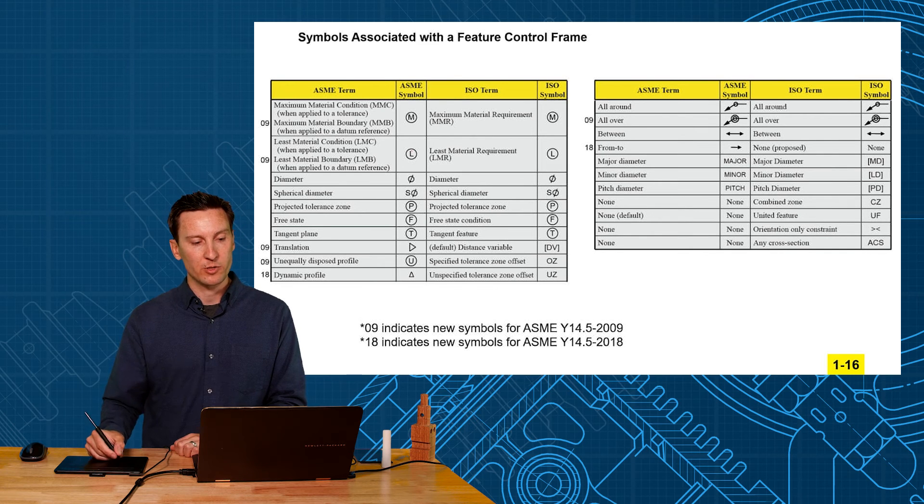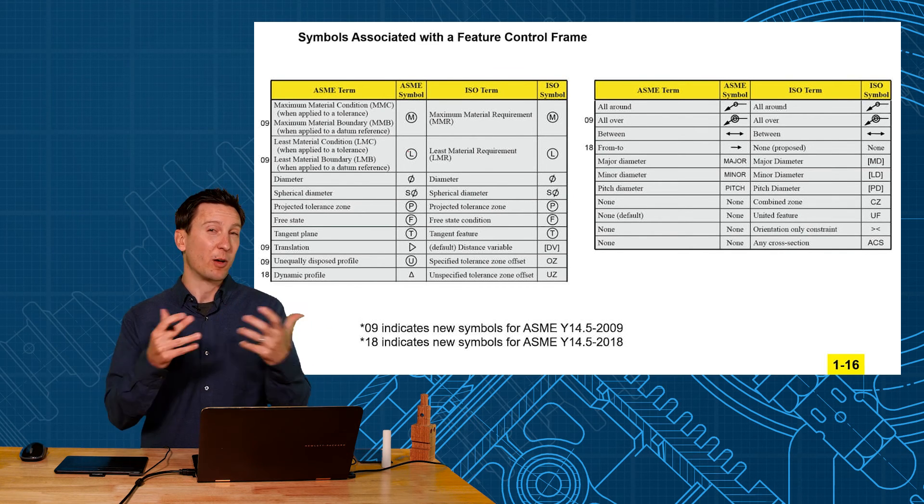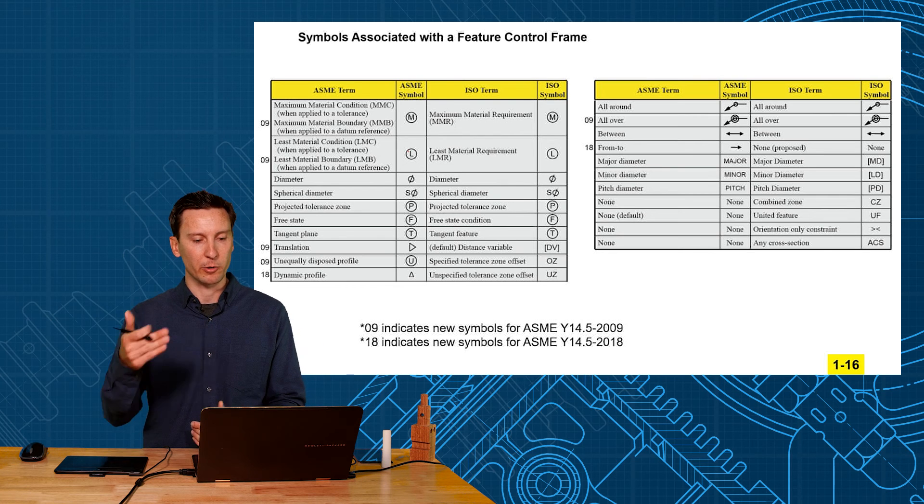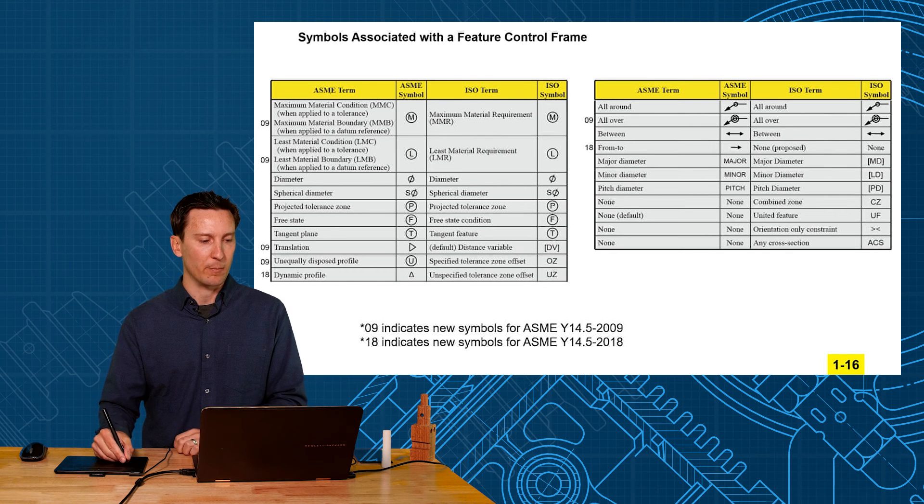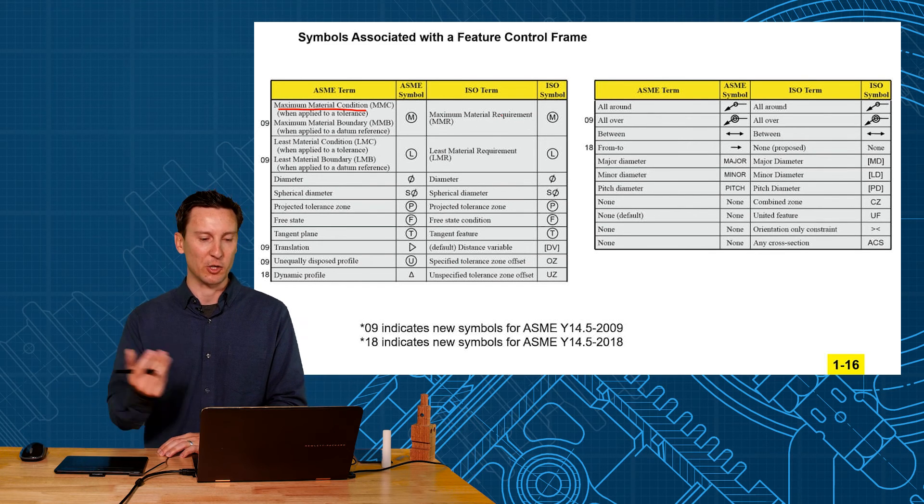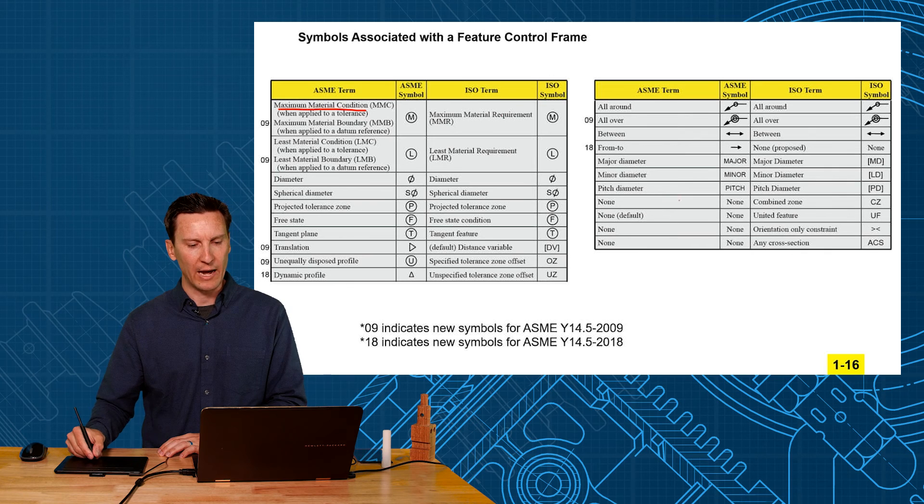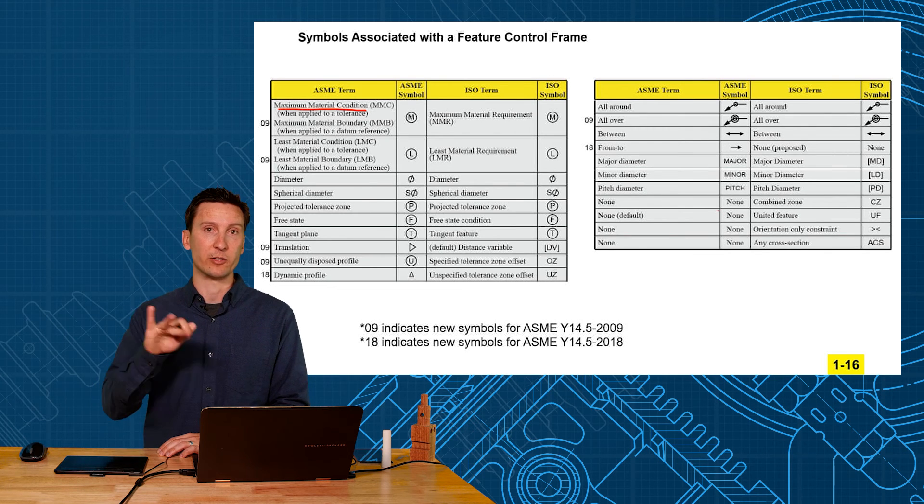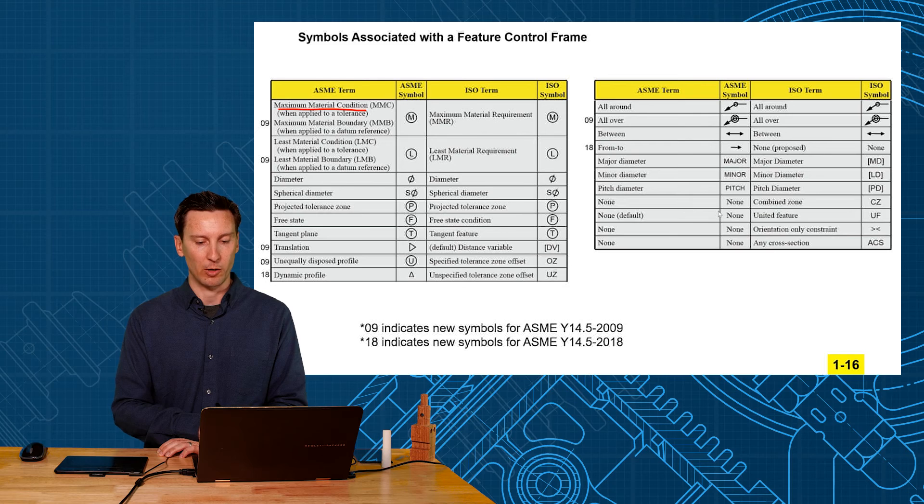I also have ISO terms. When there is an ISO term that's somewhat equivalent to the ASME, I put those in the list too. We call it maximum material condition in ASME and ISO calls it maximum material requirement. Same concept, just different term name. We have some symbols in our standard that they don't have in theirs and vice versa. You'll see that as well.